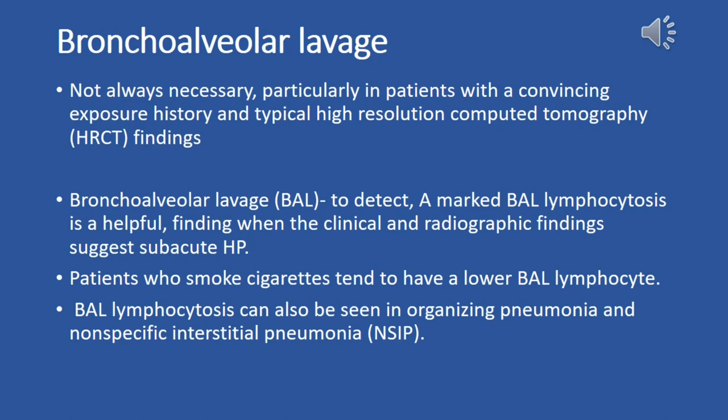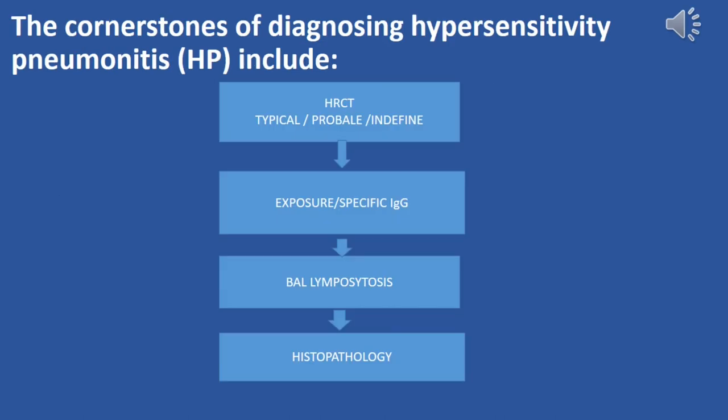Furthermore, BAL lymphocytosis can also be observed in other lung conditions, such as organizing pneumonia and nonspecific interstitial pneumonia, making BAL findings less specific for hypersensitivity pneumonitis alone. Therefore, BAL results should be interpreted in conjunction with clinical history, radiographic findings, and other diagnostic tests. A comprehensive approach integrating clinical history, imaging findings, BAL results, and histopathological examination is crucial for accurate diagnosis.